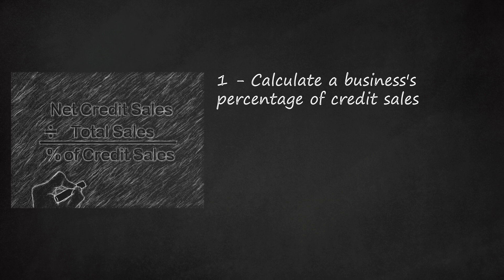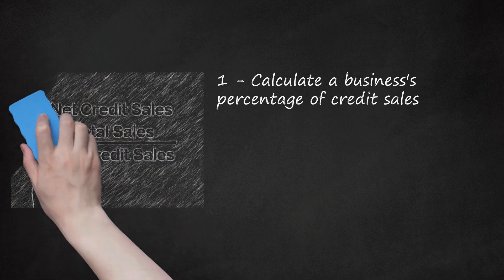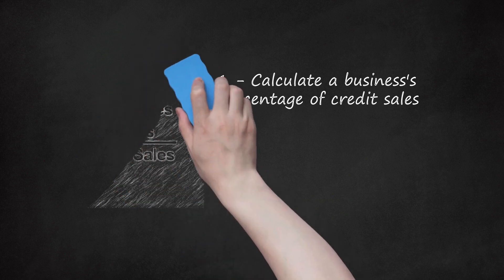For example, if a business had $200,000 in total sales over a period of time and $140,000 of those were credit sales, their percentage of credit sales would be 70%. This means that a large majority of their sales are made on credit and means little to a business owner on its own. However, if combined with a long or increasing collection time, this may be a cause for concern as the business is exposed to considerable liquidity risk. A manager might respond in this case by extending credit to fewer customers.